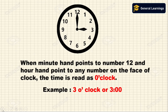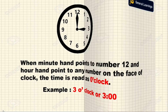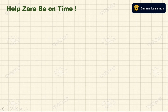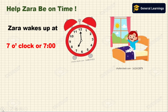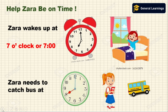Now let's help Zara be on time. Zara wakes up — the minute hand is pointing to 12 and the hour hand is pointing to 7, so the time is 7 o'clock. Next, Zara needs to catch the bus — the minute hand points to 12 and the hour hand points to 8, so the time is 8 o'clock.